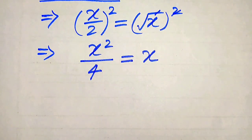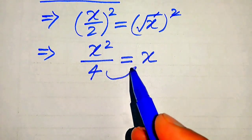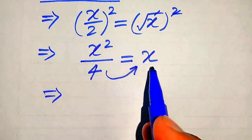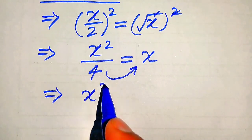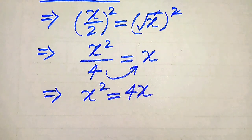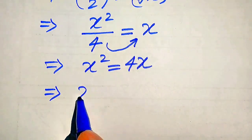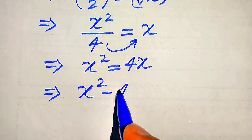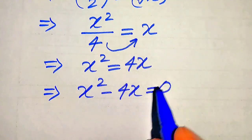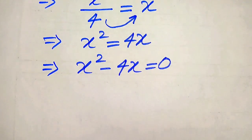In the next step we need a little simplification. The 4 in the denominator moves to the right hand side as a multiplier, so it is written as x² equals 4 times x. Then we move 4x to the left hand side, giving us x² minus 4x equals 0. This equation becomes a quadratic equation in x.